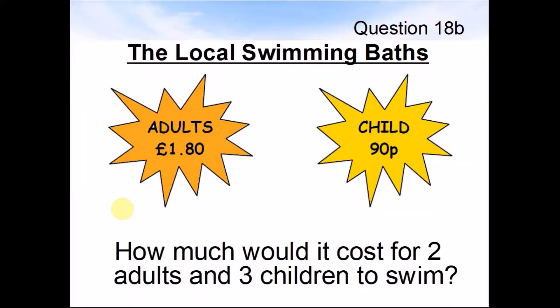Question 19a. The local swimming baths prices are: adults £1.80 and a child 90p. How much would it cost for two adults and three children to swim? Pause the video and work out the answer.